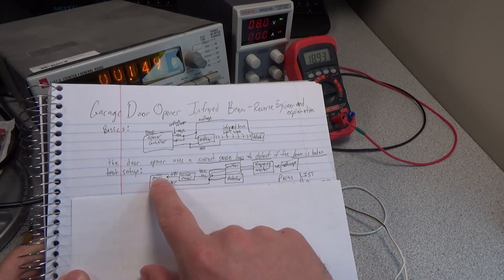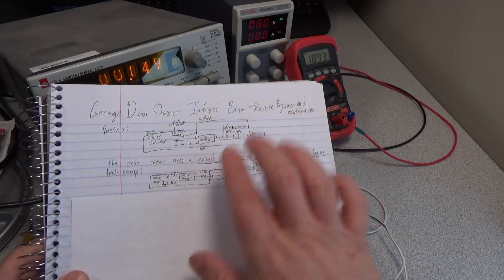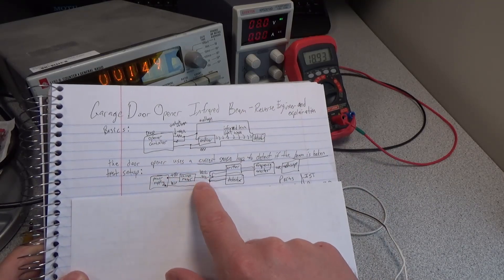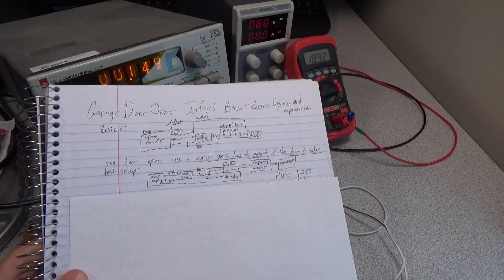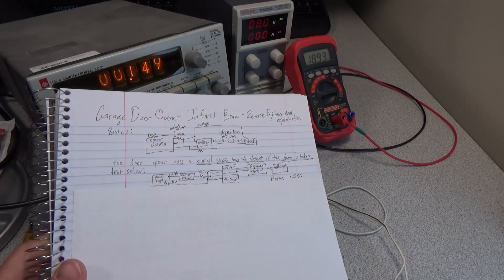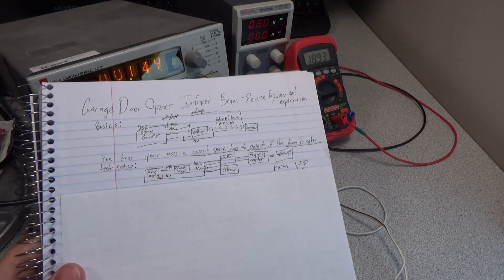This is the current sense loop. We can see here we have a current meter - this is our setup right now: power supply, current meter, 150 ohm resistor, the emitter, the detector, our frequency counter or oscilloscope. Let's take a look at these circuit boards next, and then we'll show the schematics.